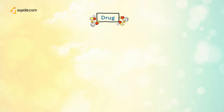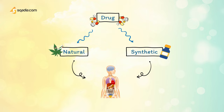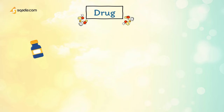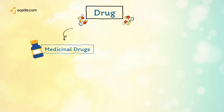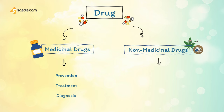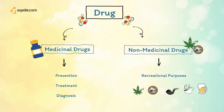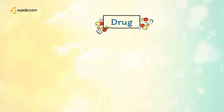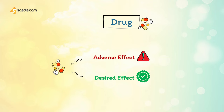A drug is an entity — a natural or synthetic substance — that alters the physiological state of a living organism. Drugs are mostly divided into two groups: medicinal drugs, which are substances used for the prevention, treatment, and diagnosis of disease; and non-medicinal drugs, which include illegal substances such as cannabis, heroin, and cocaine, as well as everyday substances such as caffeine, nicotine, and alcohol. Although drugs may have a selective action, there is always a risk of adverse effects, and the prescriber should assess the balance of desired and adverse effects when deciding which drug to prescribe.